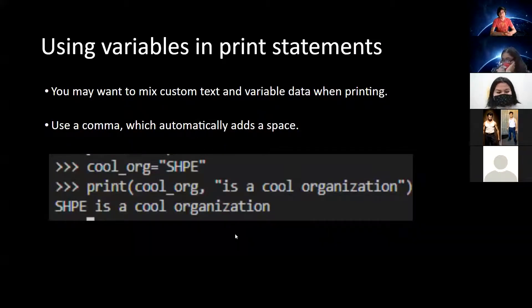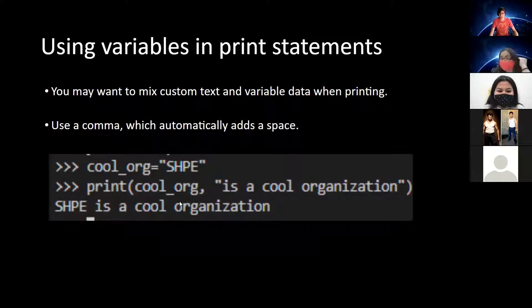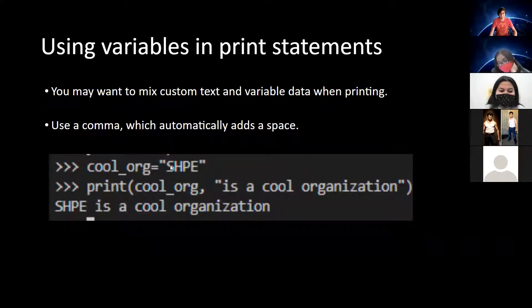If you want to use variables along with text in a print statement, you can use commas. This will insert the variable and automatically add a space, so you don't have to worry about that. In this example, our variable holds the value 'SHPE' and we're printing 'SHPE' comma 'is a cool organization', and the output is 'SHPE is a cool organization'.